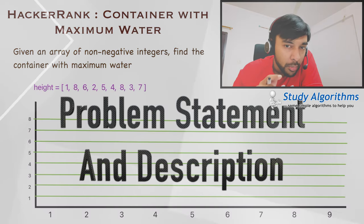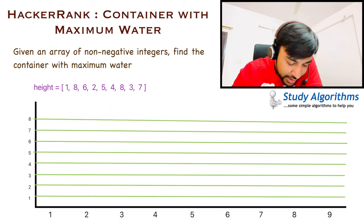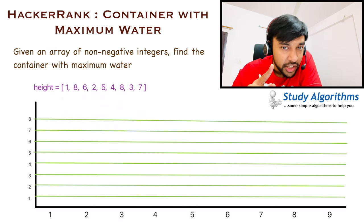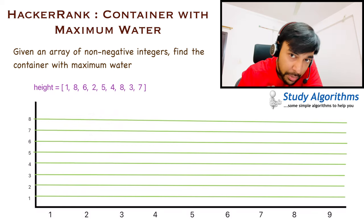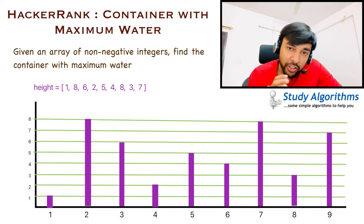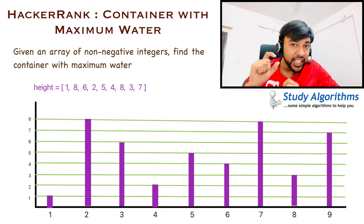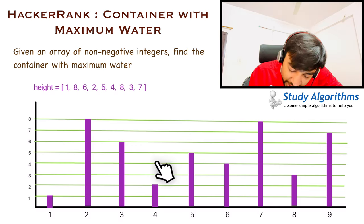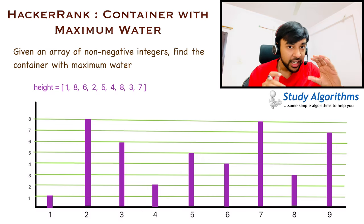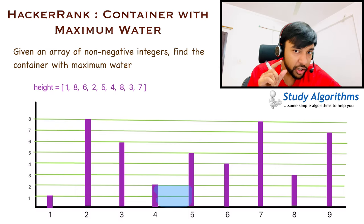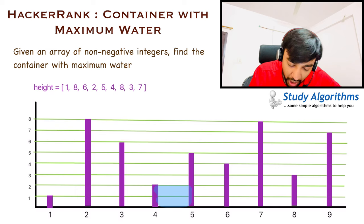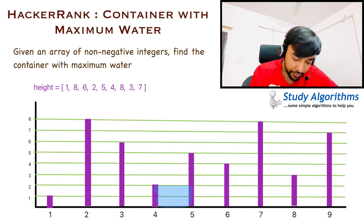The best way to understand any problem is to understand the given sample test case. In this problem, you are given a height array consisting of positive integers. Each of these integers represents the height of a stick. If we try to plot out these heights on a graph, they would look something like this. Once you have plotted all of these values, you realize that these sticks can form certain containers. For example, stick 4 and stick 5 form a container that can store some water. The maximum amount of water you can add is limited — if you try to add more, it would spill off from the shorter side.